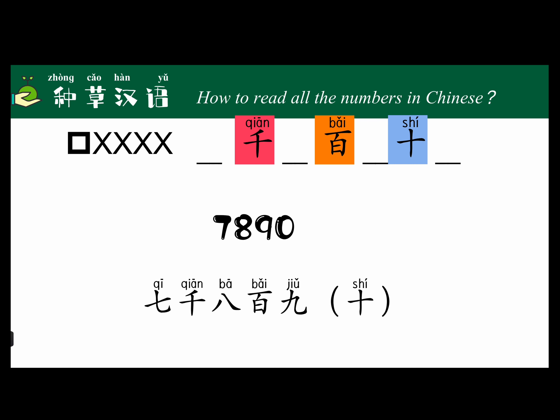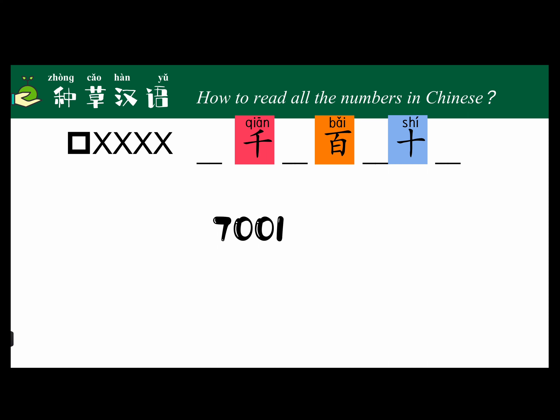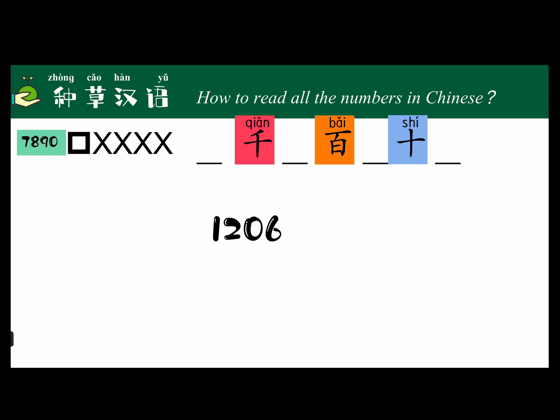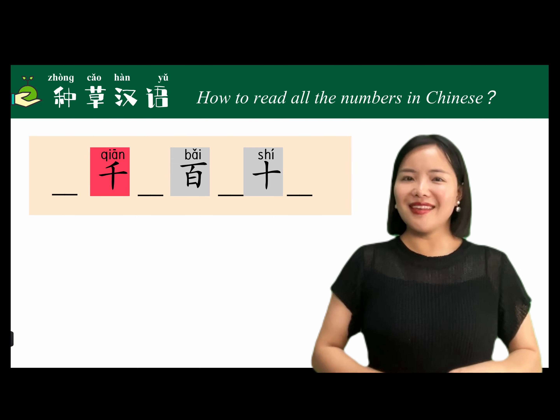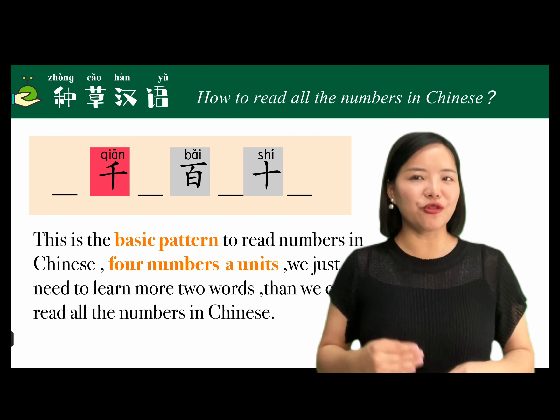More practice: 7,890 is 七千八百九十 (qī qiān bā bǎi jiǔ shí). 7,001 is 七千零一 (qī qiān líng yī). 1,026 is 一千零二十六 (yī qiān líng èr shí liù). 1,206 is 一千二百零六 (yī qiān èr bǎi líng liù). 9,052 is 九千零五十二 (jiǔ qiān líng wǔ shí èr).